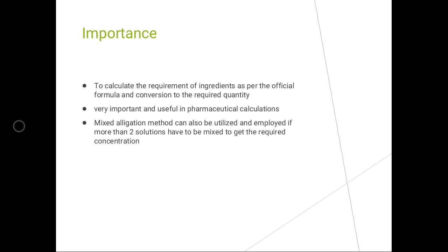The importance of the allegation method: it is used to calculate the requirement of ingredients as per the official formula and conversion of the required quantity. This is very important and useful in pharmaceutical calculations. The mixed allegation method, also known as the alternative allegation method, can also be utilized if more than two solutions have to be mixed to get the required concentration.